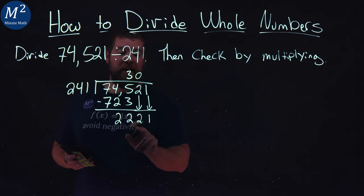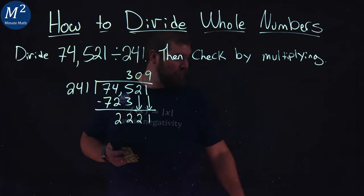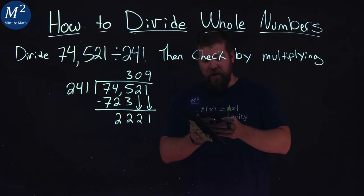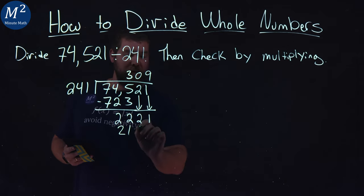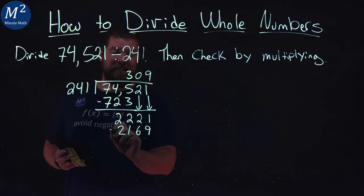Now, 241, does that go into 2,221? That's going to be nine times and I forget what that number is. It's 2,169. So, 9 times 241 is 2,169.